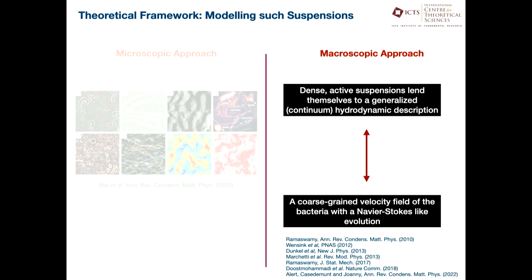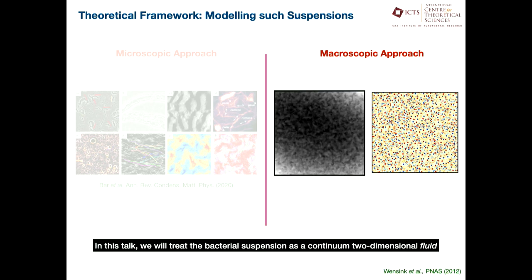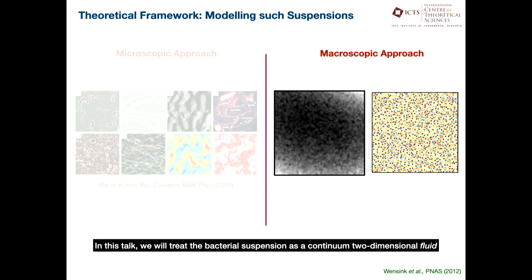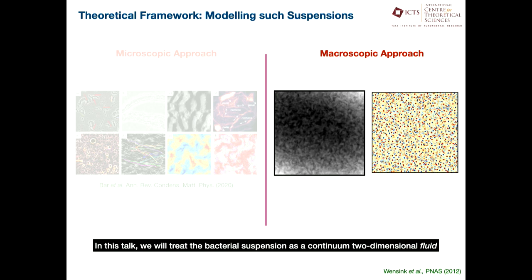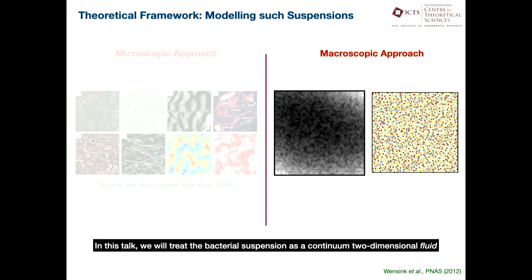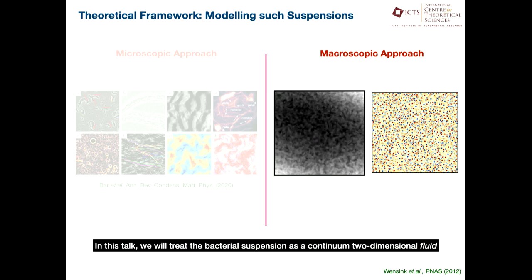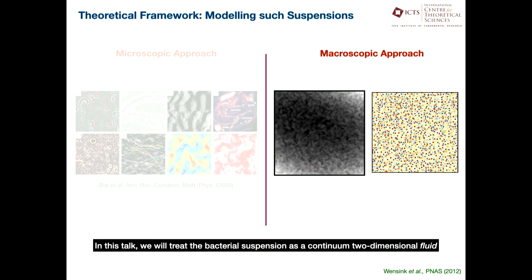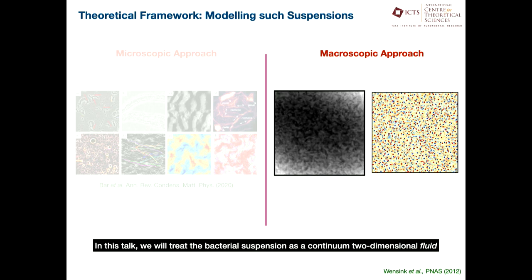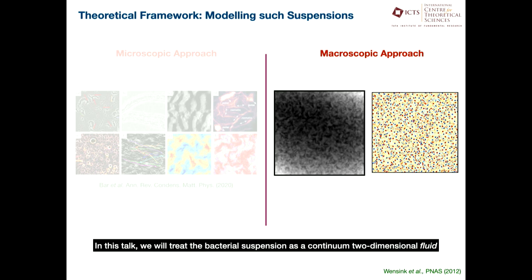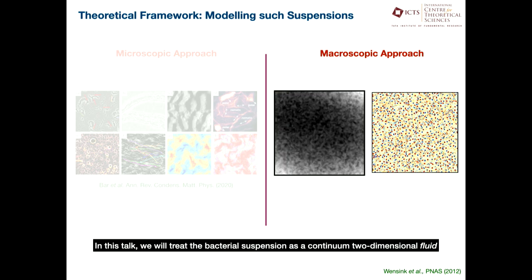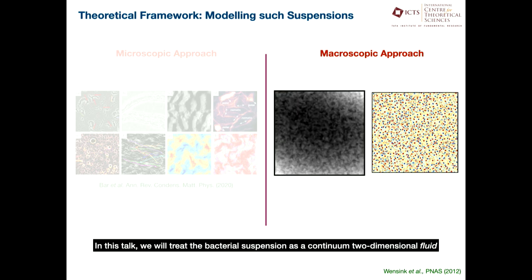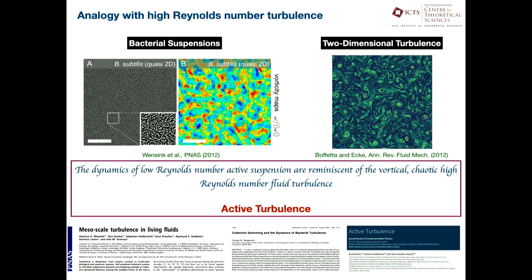I'm working in the framework of what would be called dry active systems, which lends itself to a coarse-grained velocity field of the bacteria with an obvious Stokes-like description. Since there won't be time for detailed derivations — just proof of the pudding — I'll show you what the model is. If you look at that coarse-grained model and start solving and simulating it, you get a flow field which looks very much like what we are seeing in the lab. In this talk, the bacterial suspension will be treated as a continuum two-dimensional fluid.